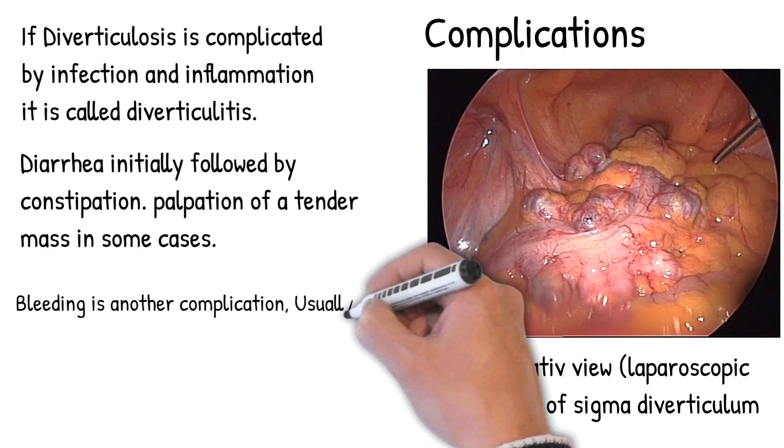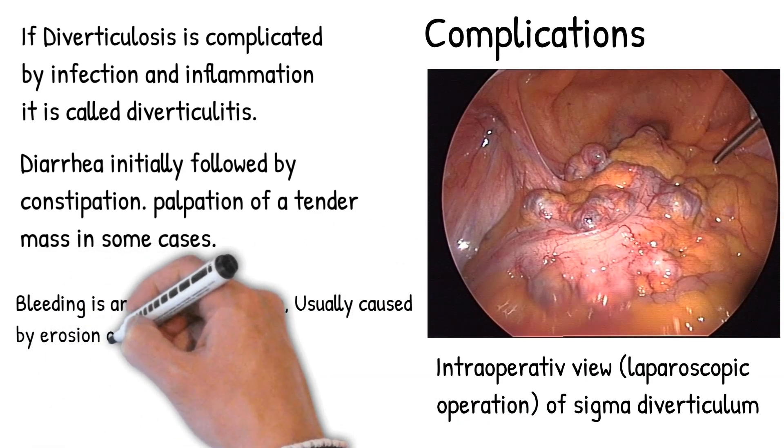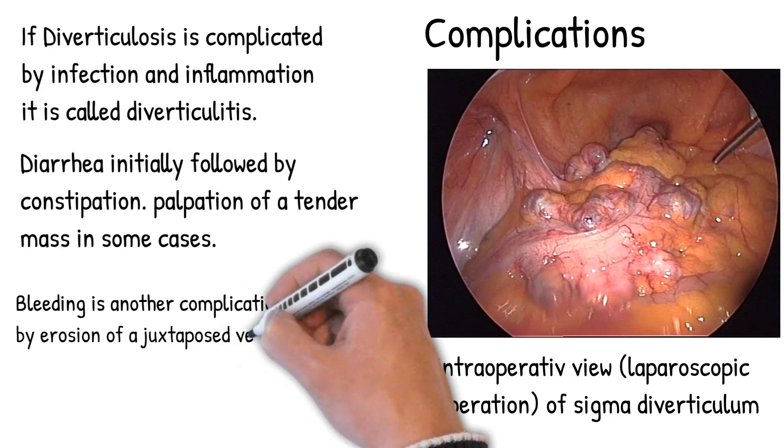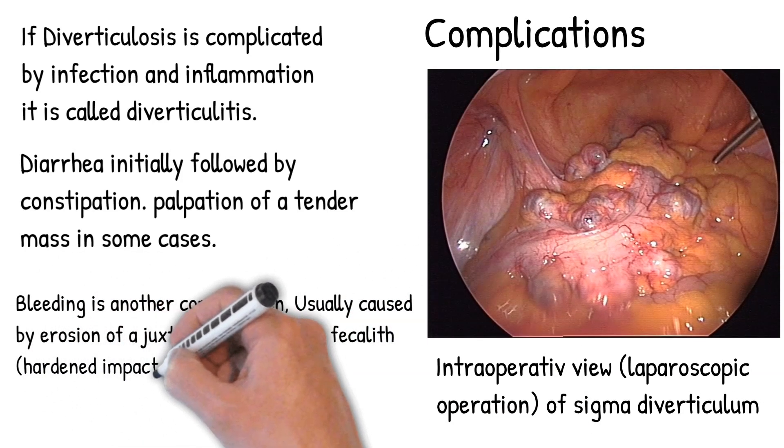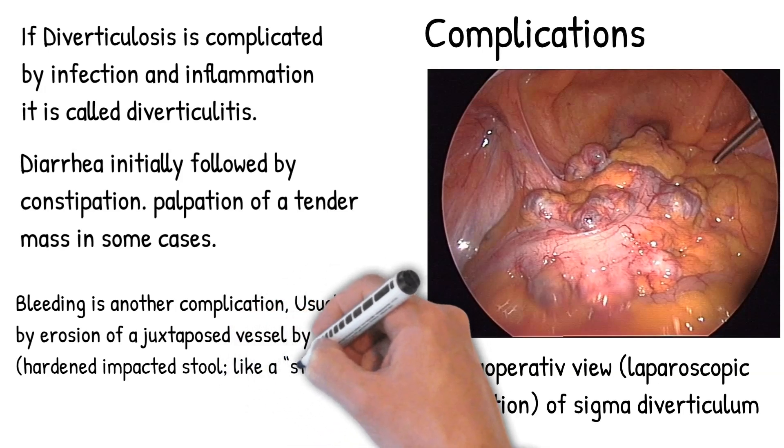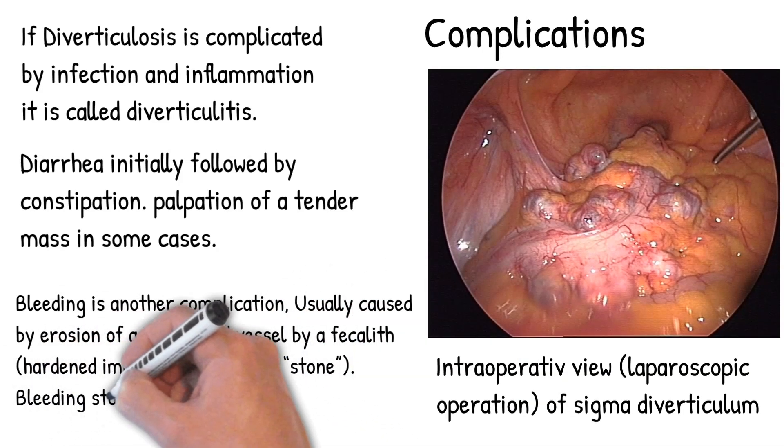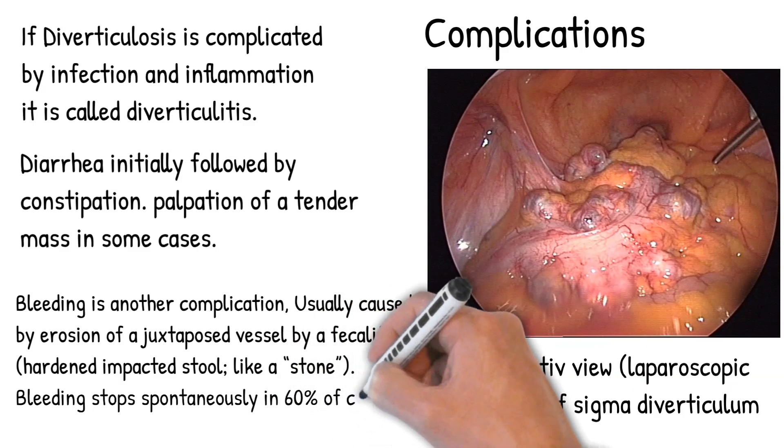Bleeding is another complication, usually caused by erosion of a juxtaposed vessel by a fecalith, hardened impacted stool like a stone. Bleeding stops spontaneously in 60% of cases. Scarring of the juxtaposed vessel in recurrent attacks of diverticulitis prevents bleeding.